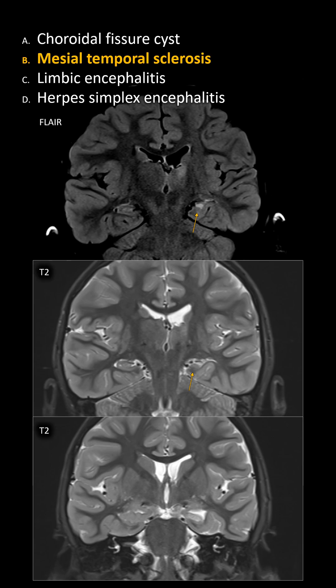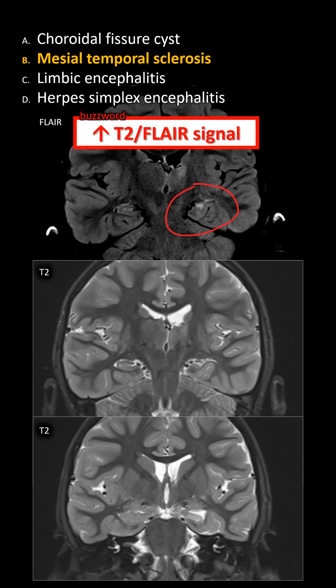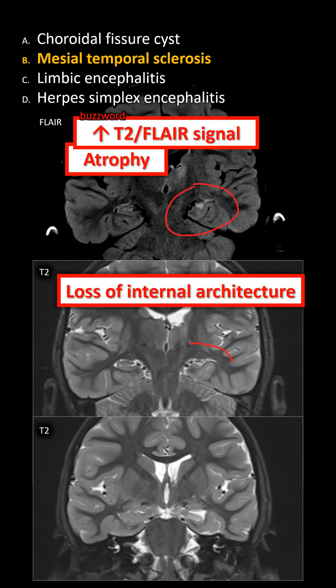The best choice is mesiotemporal sclerosis. Three key findings for the affected hippocampus are: a) volume loss, b) abnormal T2/FLAIR signal, and c) loss of internal architecture. If you see 2 out of 3 findings, there is a high diagnostic certainty.